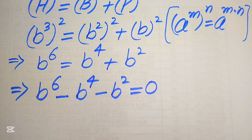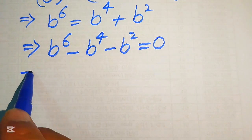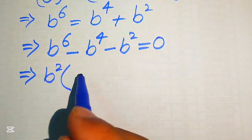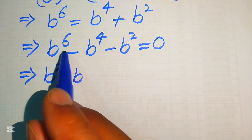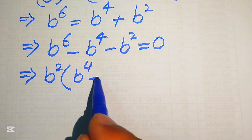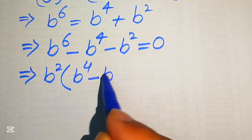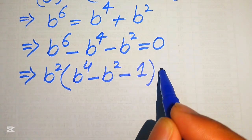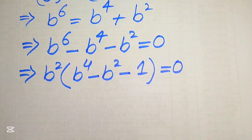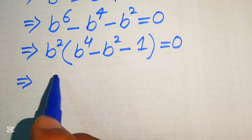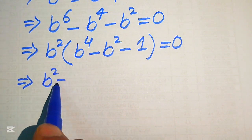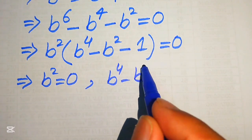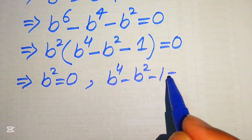Each term has b² as a common factor, so we factor it out: b²(b⁴ − b² − 1) = 0. This gives two cases: b² = 0, or b⁴ − b² − 1 = 0.